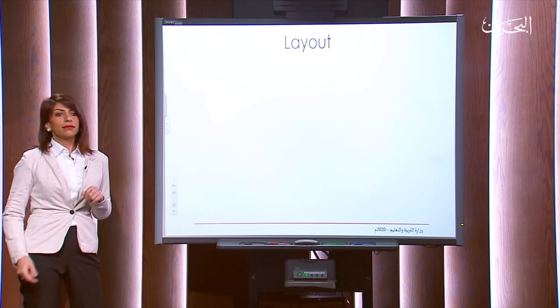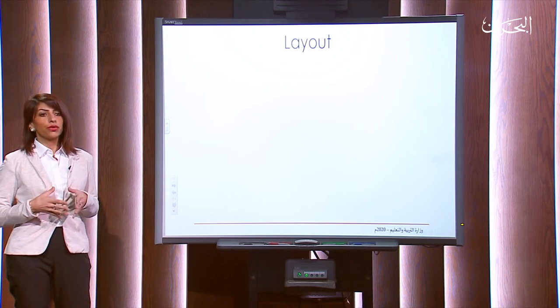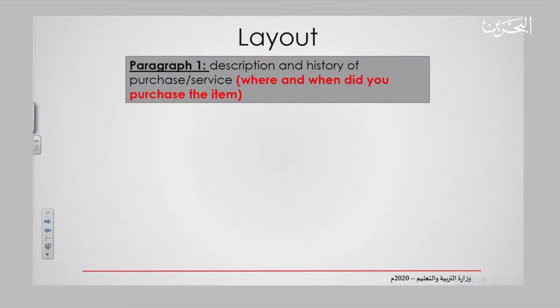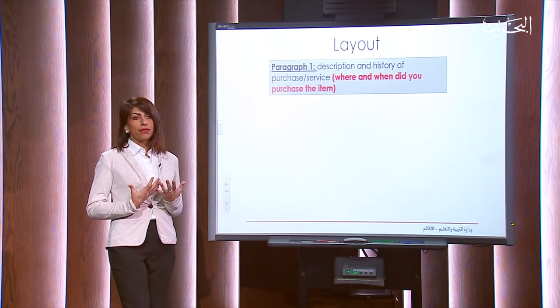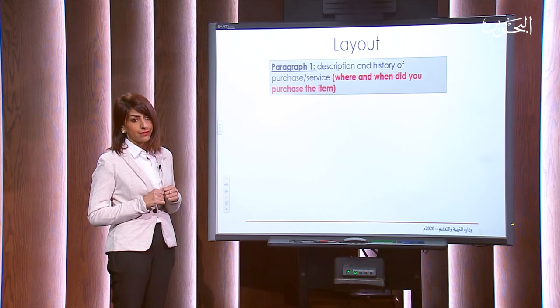Now, before we write together, let's see the layout of a letter of complaint. In paragraph one, there is a description and history of the purchase or the service. You have to mention where you bought it from — online or from a local shop — and you have to tell when you purchased the item: was it one week back, one month back? It depends on the time you made the purchase.